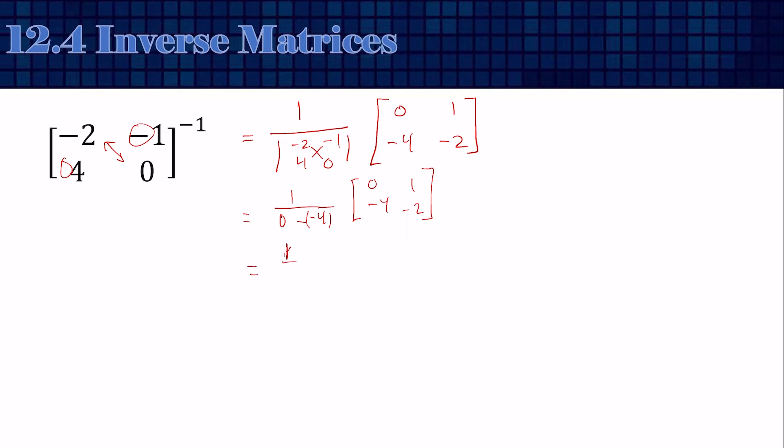So that's 1 fourth. And distribute the 1 fourth. So we'll have 0, 1 fourth, negative 1, and negative 1 half.